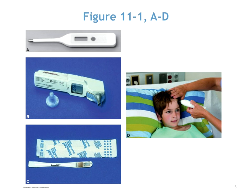The old mercury-in-glass thermometers — blue tip for oral, red tip for rectal — are no longer used because of the risk of mercury exposure. They were found in linen closets throughout the country. One mercury thermometer broke in Maryland and closed down an entire middle school due to the amount spilled — a minuscule amount, but it's taken very seriously these days.